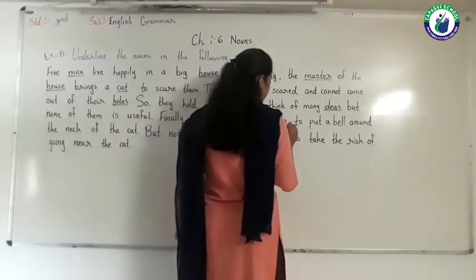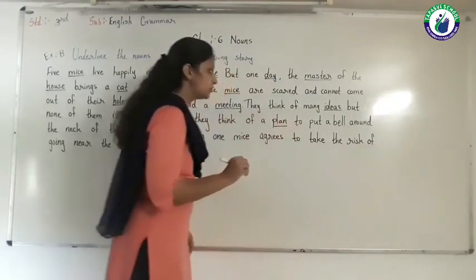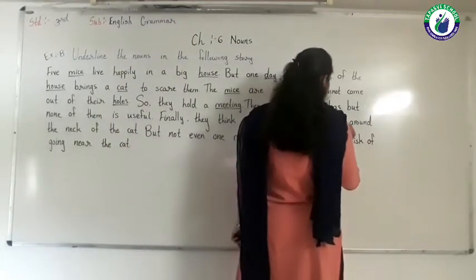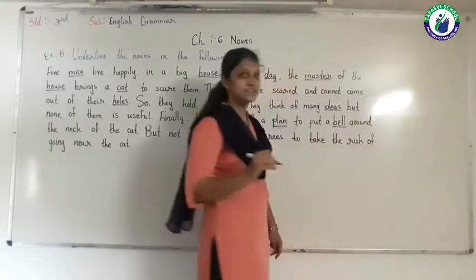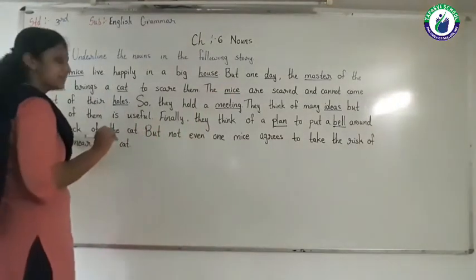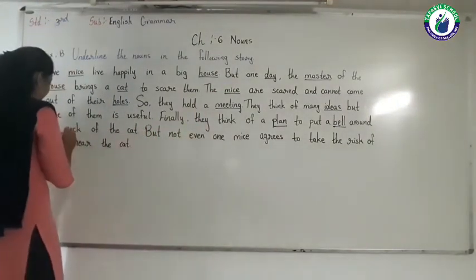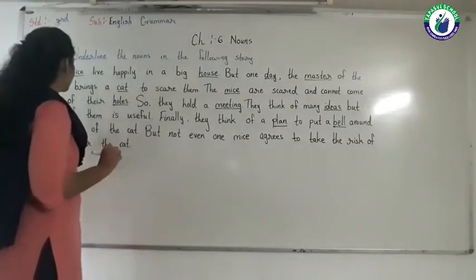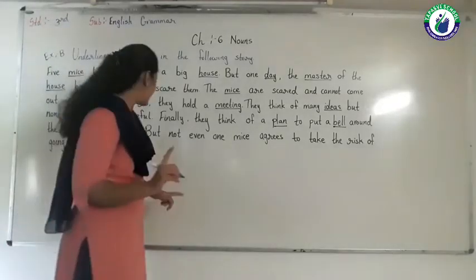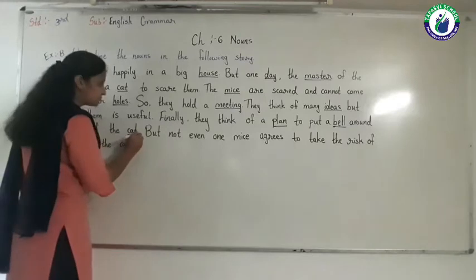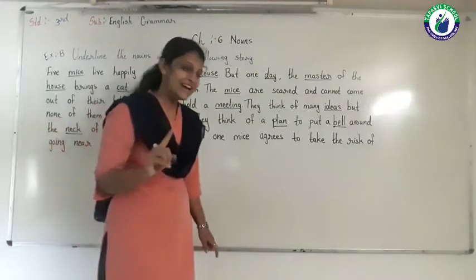To put a bell — name of a thing — so we include it in noun. The word bell is called a noun. Around the neck — neck is a body part, so we underline it. The word neck is called a noun. Of the cat — it is an animal — we underline it and it is called a noun.